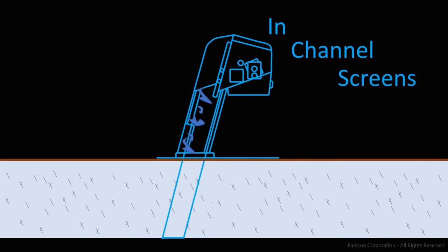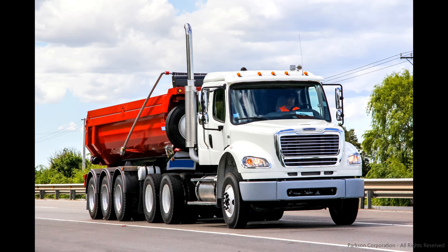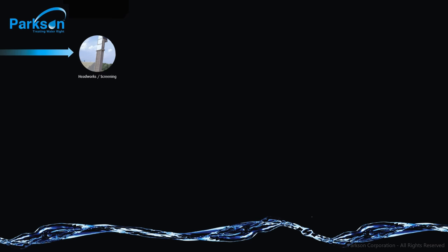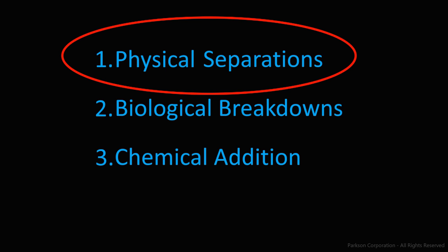Now that we have the larger stuff taken out of the channel, we need to transport it away. This brings us to the second stop on our treatment schematic, screenings to watering and conveyance. As with the first step, we will be using physical separations here.